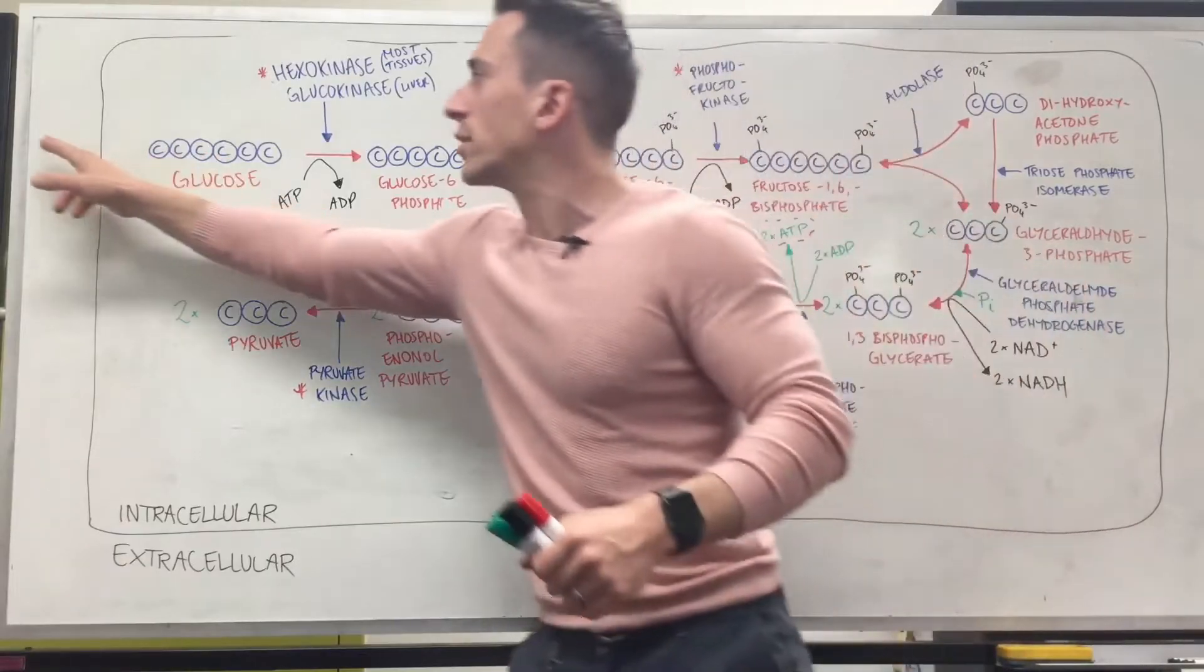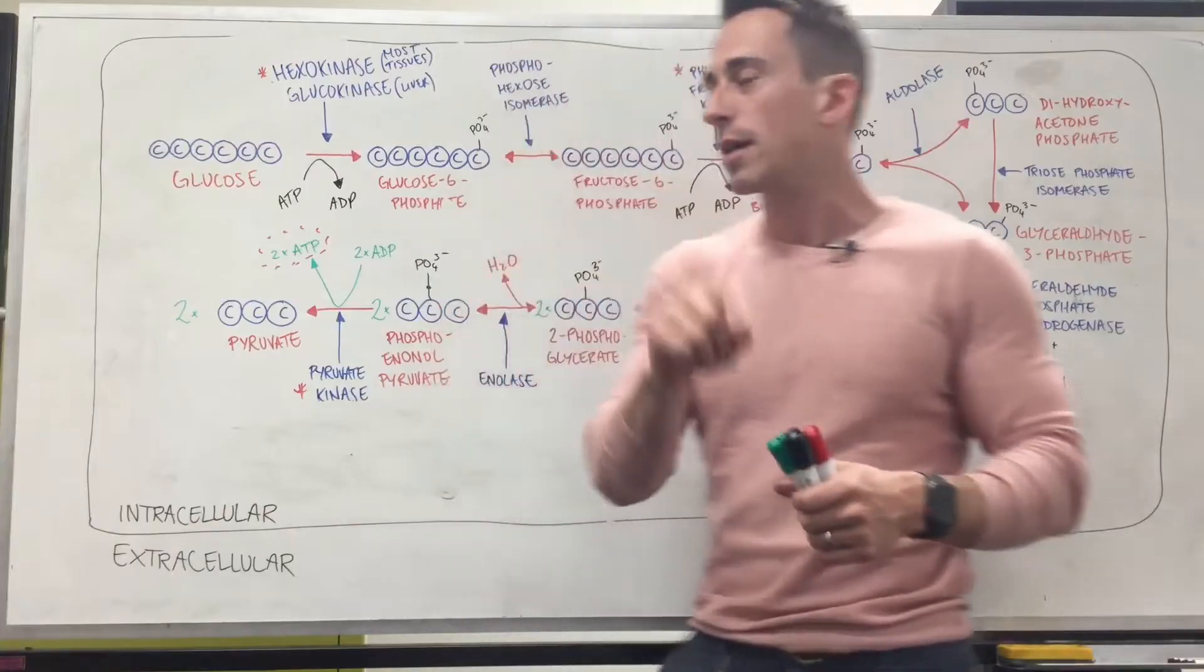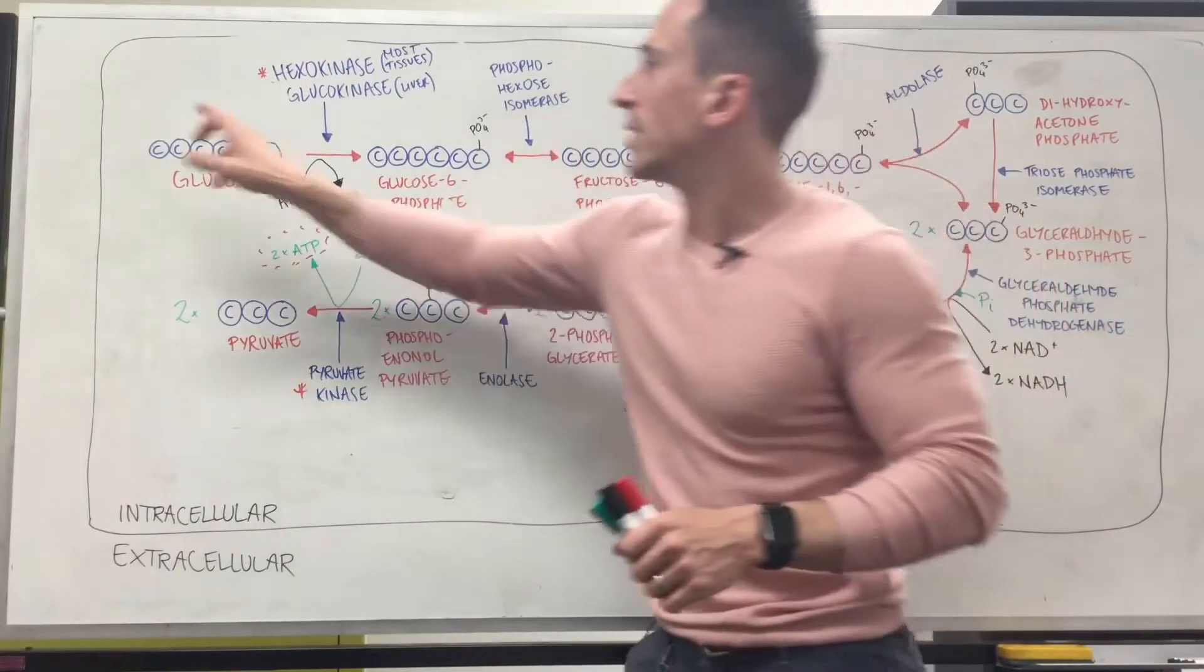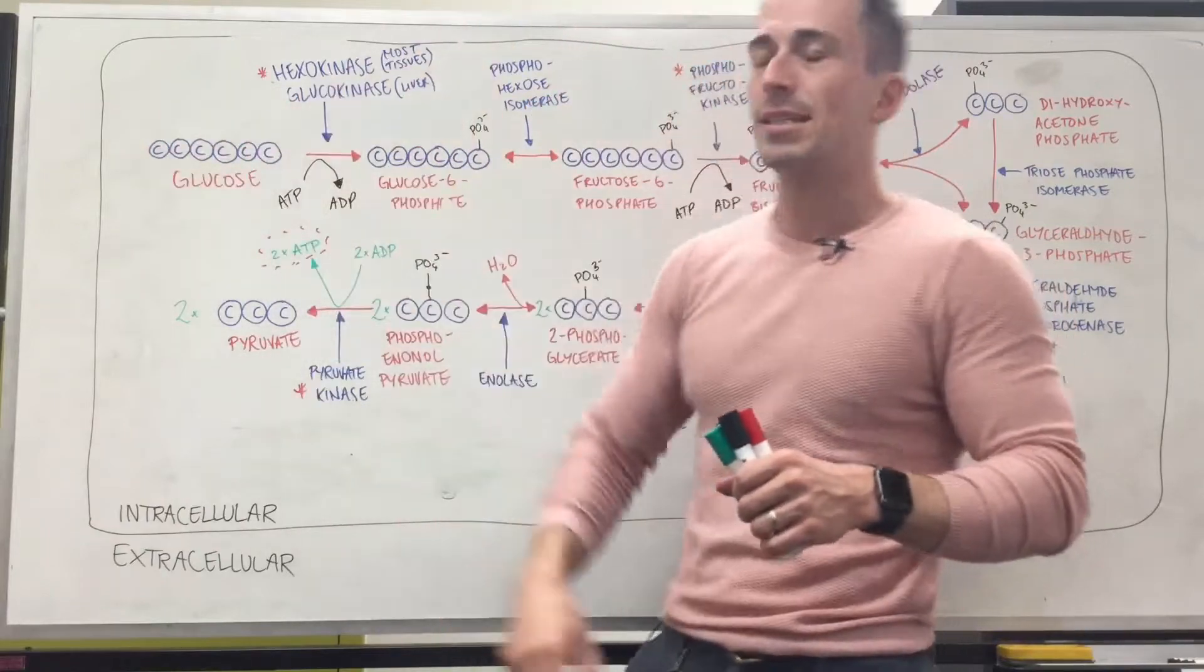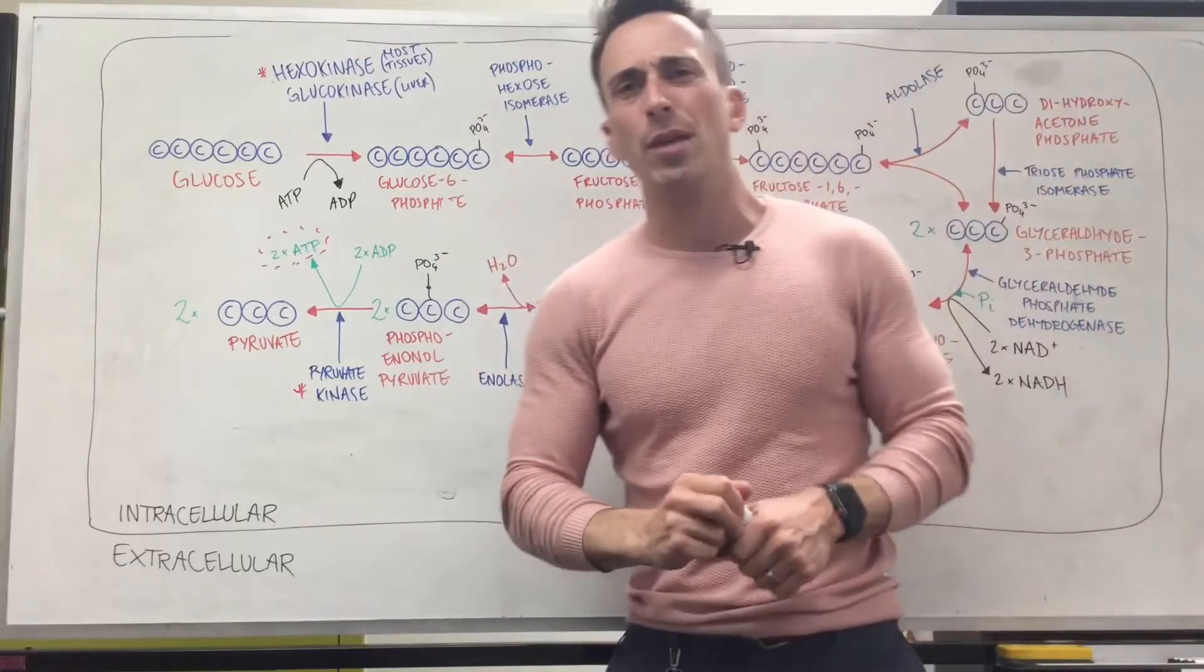In order to get glucose in you need a glucose transporter, and I've spoken about that in previous videos. Glucose itself is a 6-carbon molecule as you can see: 1, 2, 3, 4, 5, 6. The very first step is to turn glucose into something called glucose 6-phosphate. What does that mean?